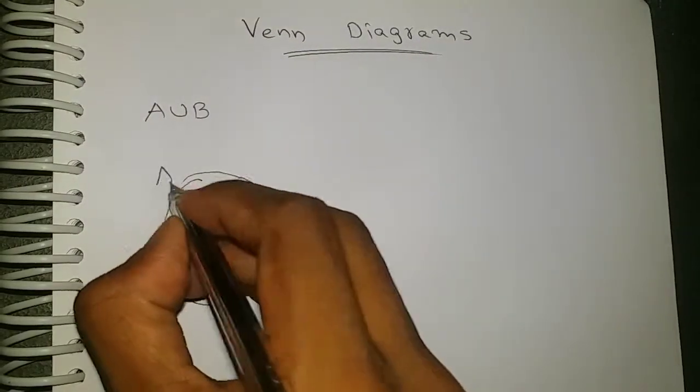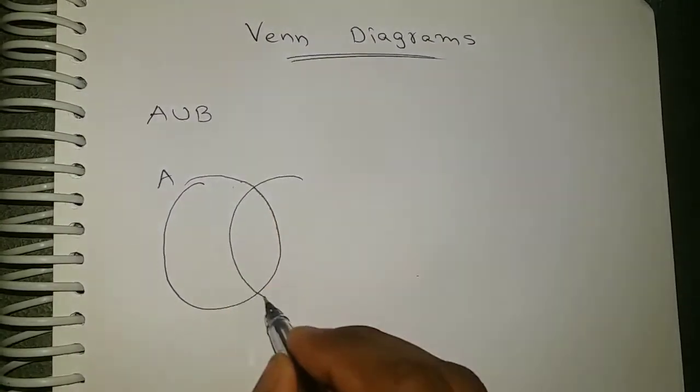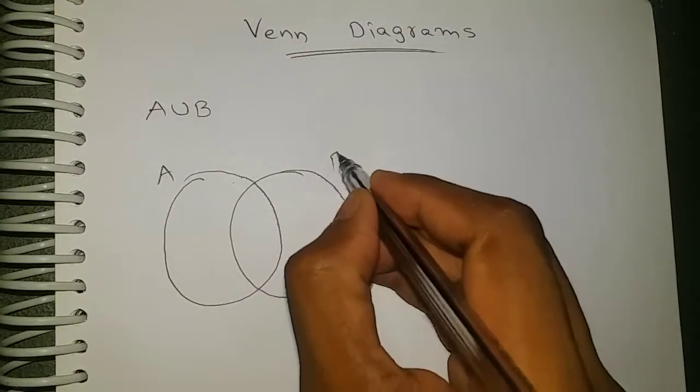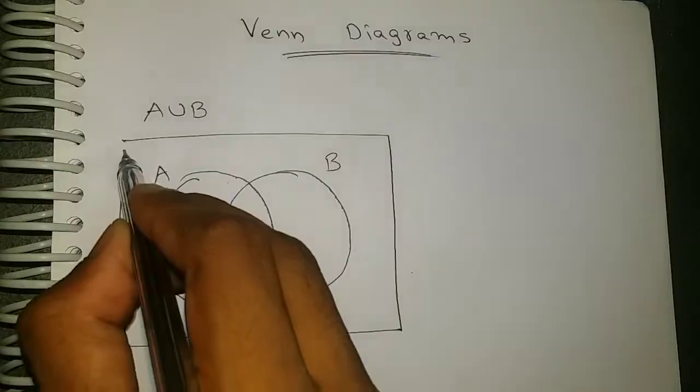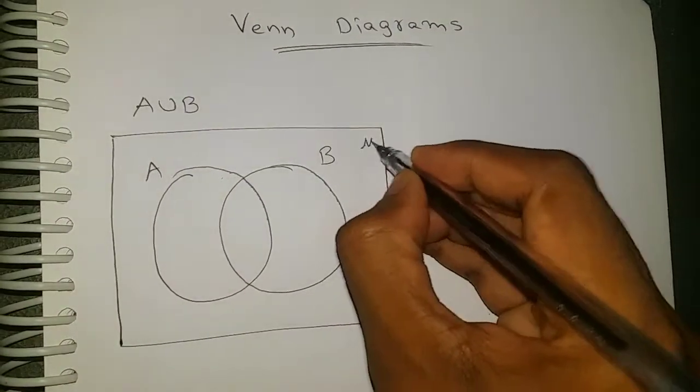Yes, we have set A and we have one more set B and the universal set. Set A, set B and the universal set.